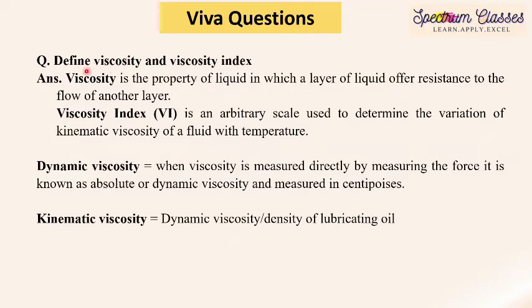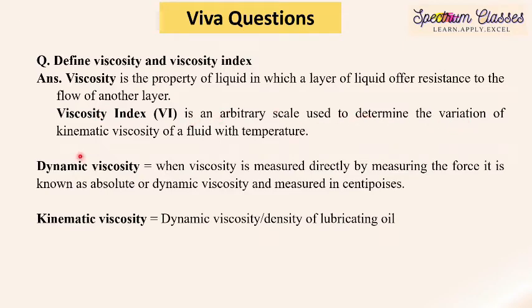Define viscosity and viscosity index. These two are properties of fluids. Viscosity is the property of a liquid in which a layer of liquid offers resistance to the flow of another layer. Viscosity Index — abbreviated as VI, not the numeral 6 — is an arbitrary scale used to determine the variation of kinematic viscosity of a fluid with temperature.